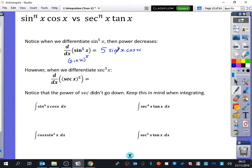Okay, good. So we get 5 sine to the power of 4x cos x. Notice how the power has decreased from 5 to 4.